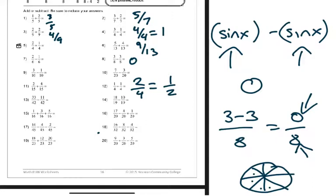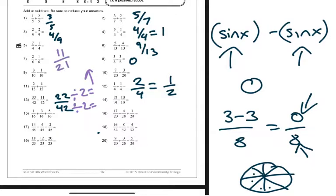They're giving you bigger numbers but the idea is still the same. Thirty-three minus eleven is twenty-two, so this is twenty-two over forty-two. Dividing both by two gives eleven over twenty-one. Eleven is prime, so I know I'm done there. Number fourteen: eighteen minus ten is eight, so this is eight out of nineteen. Eight out of nineteen - nineteen is prime, so there's no way that's going to reduce.